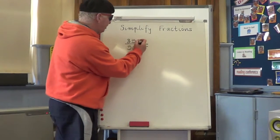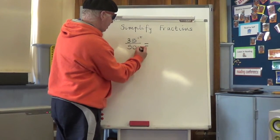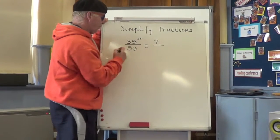Five into thirty-five. So we divide that by five. Makes seven. Seven fives is thirty-five.